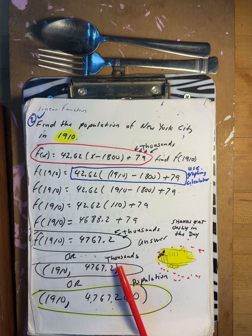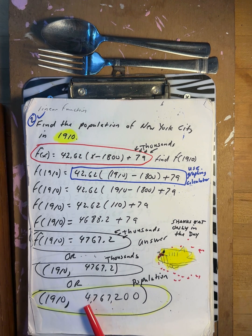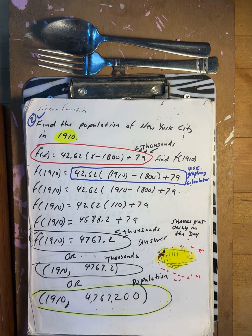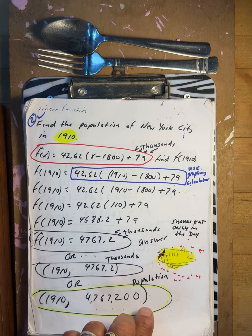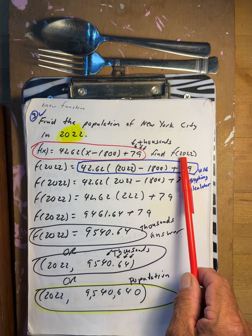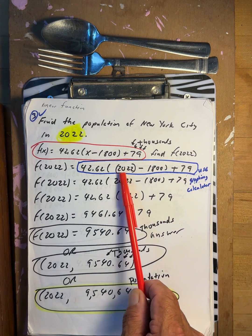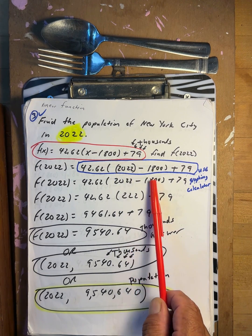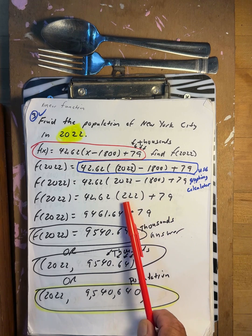So in 1910, New York City's population was four million, seven hundred sixty-seven thousand, two hundred. Next, find the population in New York City in 2022. Again, in thousands: f of 2022. 2022 minus 1800 gives you 222 years.